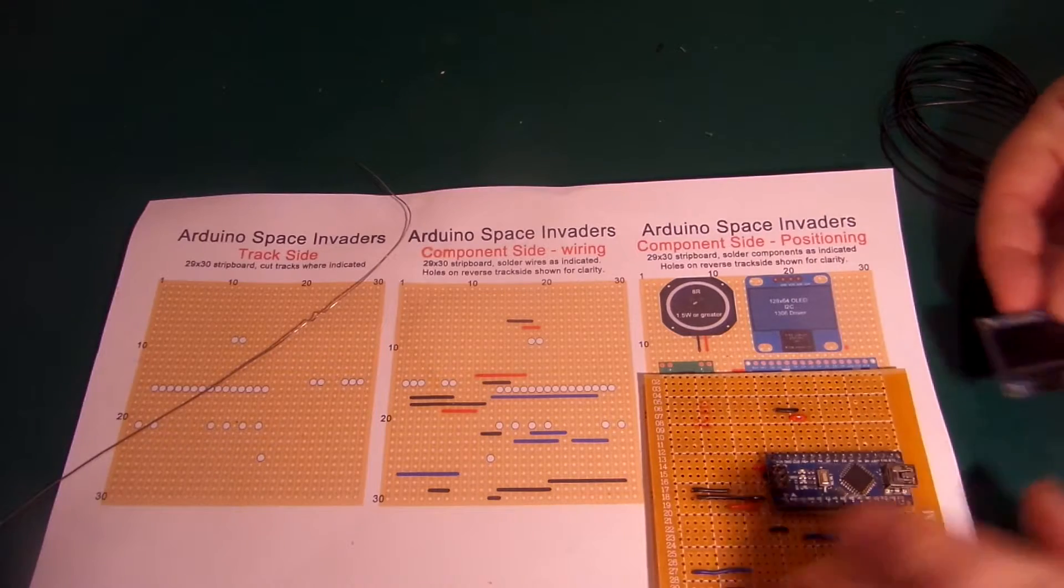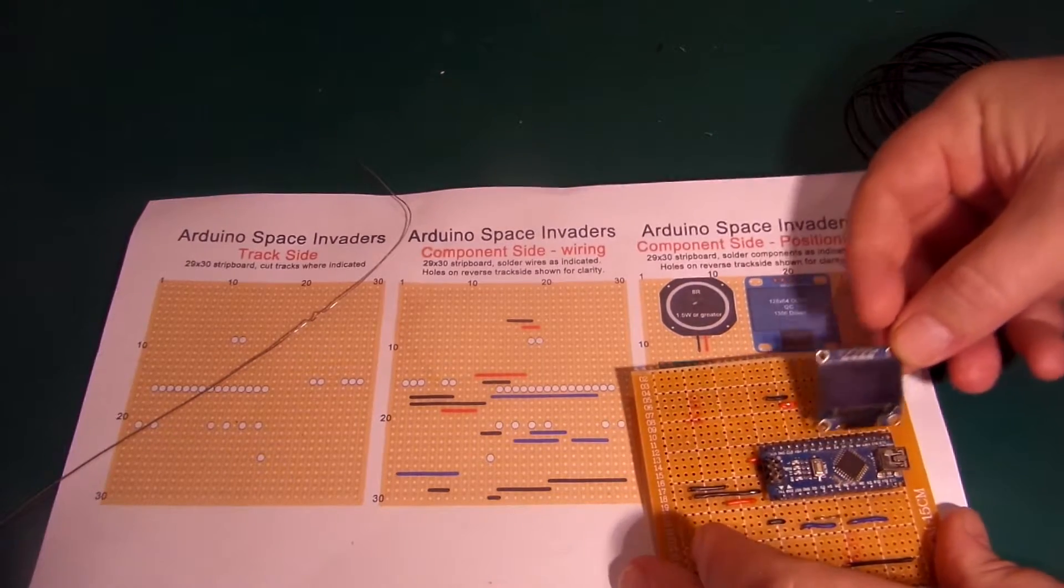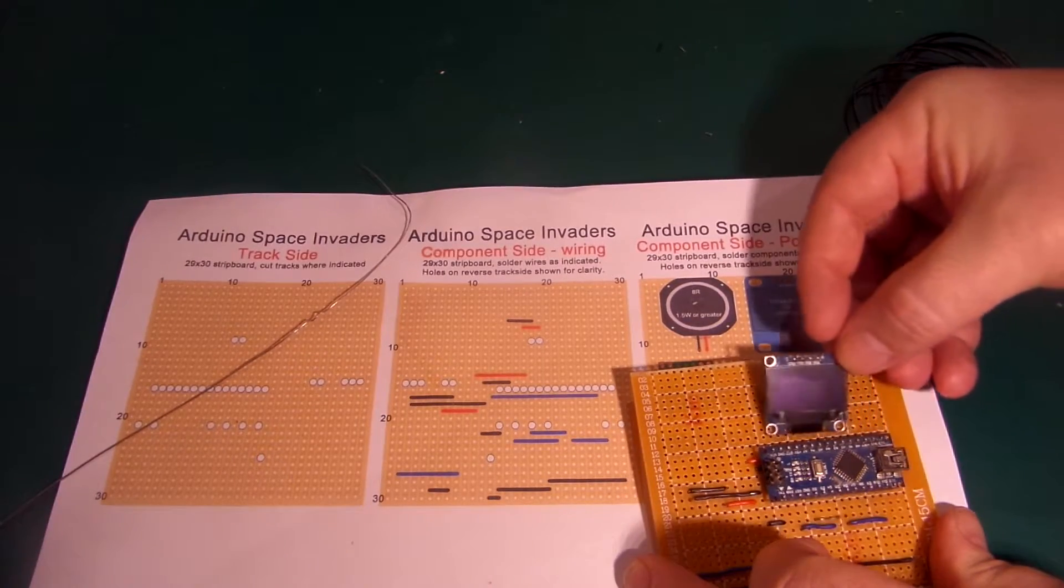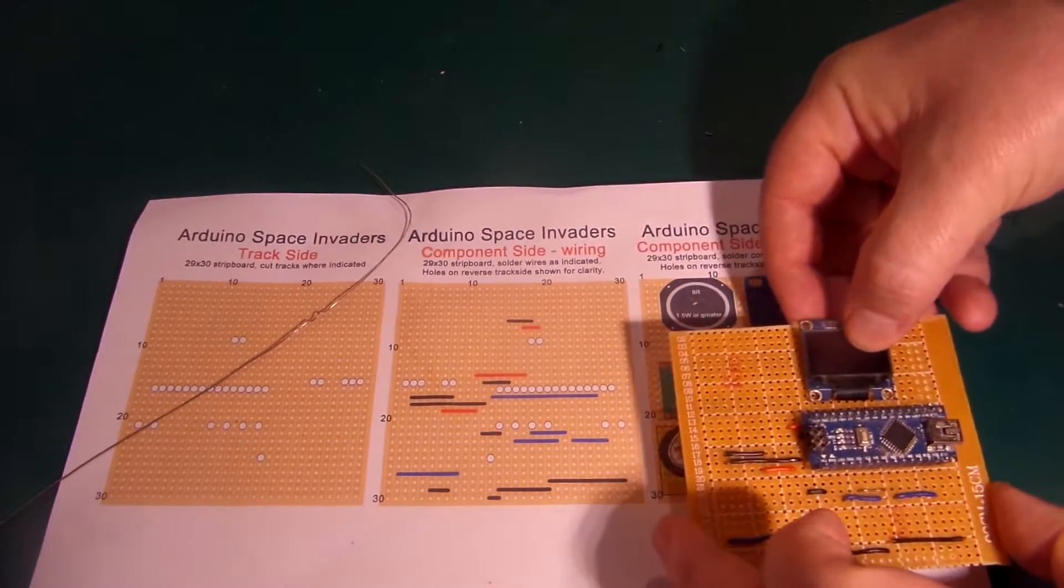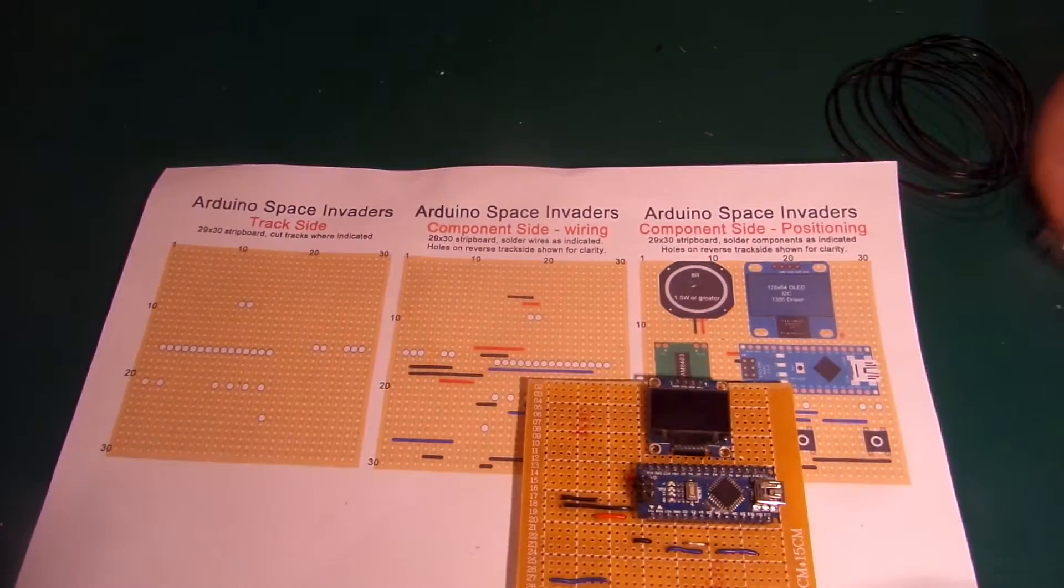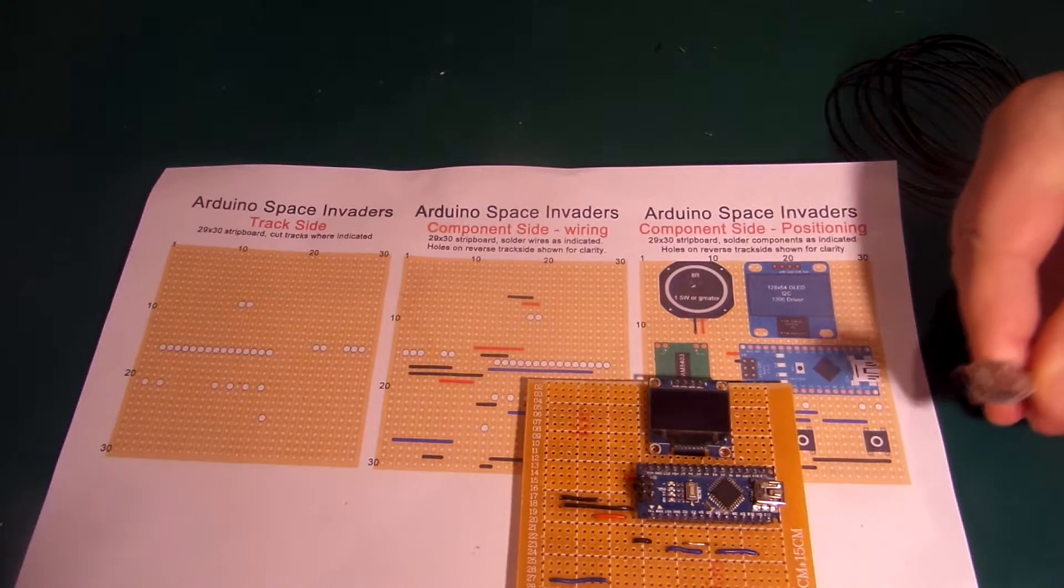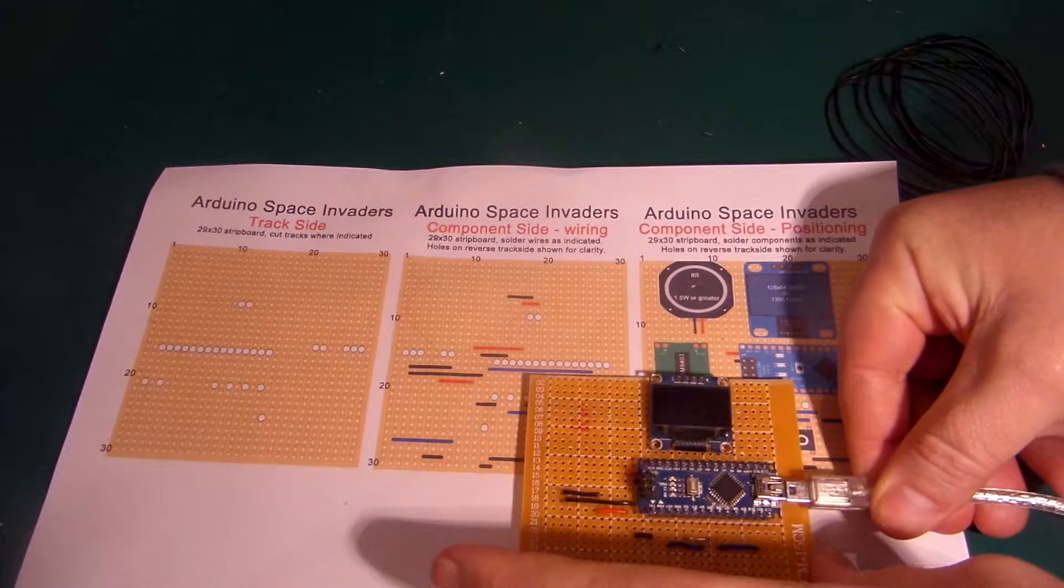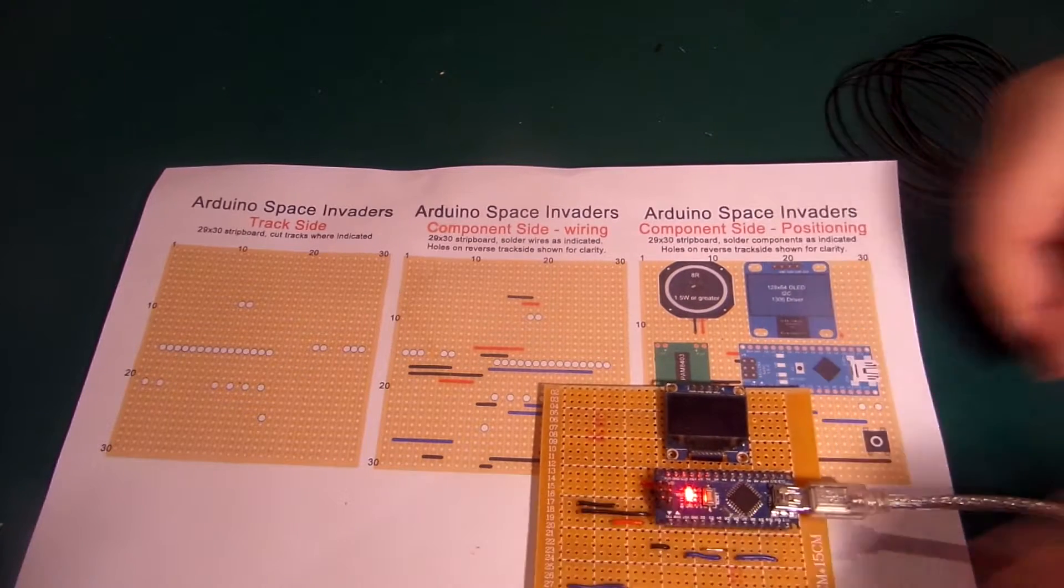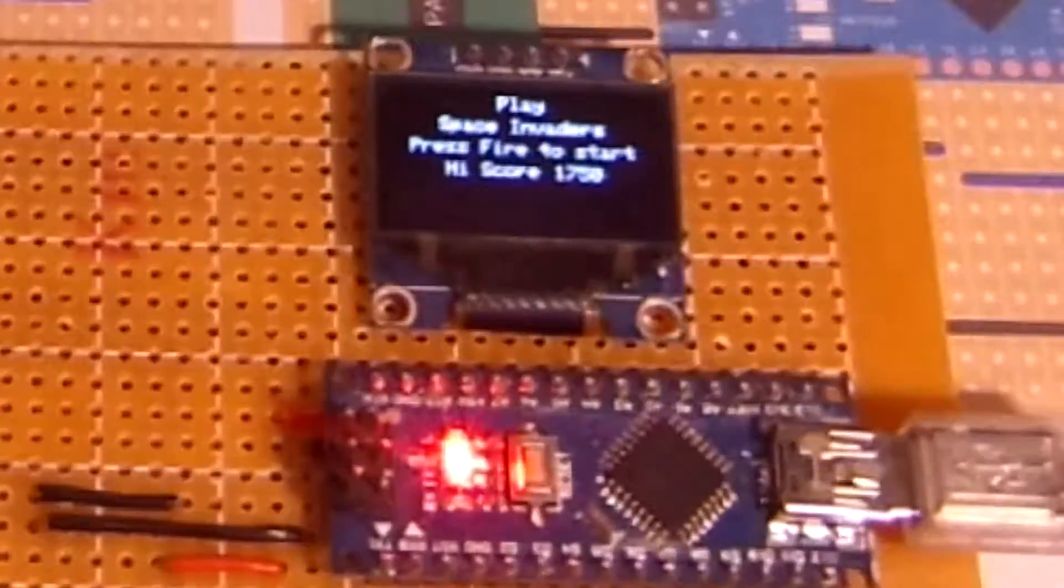I then add the OLED screen and solder that up too. As this particular Nano is one I've used on the breadboard for Space Invaders, then all it needs to test is to get the power and we should get a display. Cool, works.